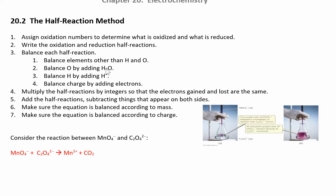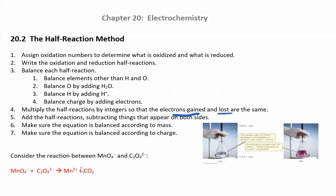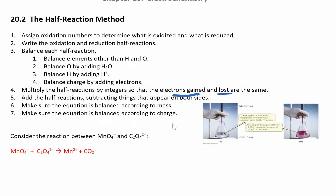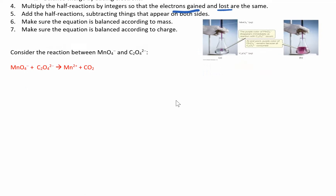To summarize the steps: balance everything other than hydrogens and oxygens, balance oxygens by adding water, balance hydrogens by adding H+, then balance the charge by adding electrons — that's usually the trickiest part. Make sure you pay attention to your coefficients. Do that for each half reaction, then multiply the half reactions by some number so electrons gained equal electrons lost. Add the half reactions, cancel things that are the same on both sides, then double-check that mass and charge are balanced.